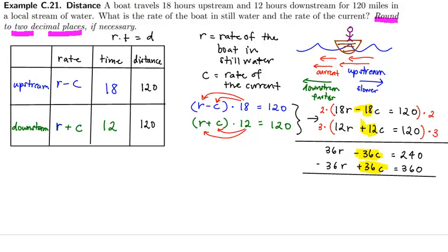So I can go ahead and add the two equations together. 36r plus 36r is 72r. Minus 36c plus 36c, those cancel as I wanted. 72r equals 240 plus 360, which is 600.